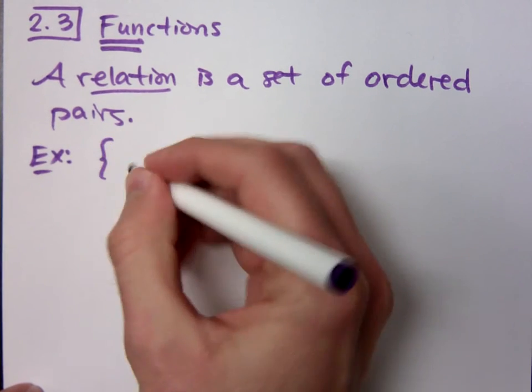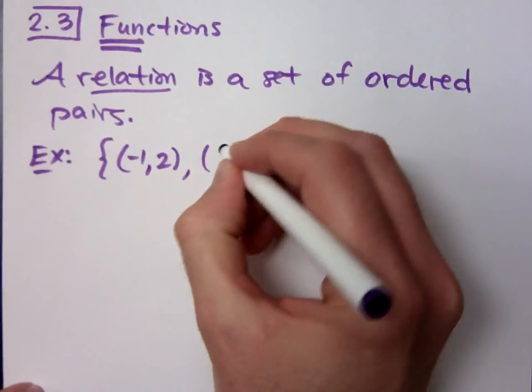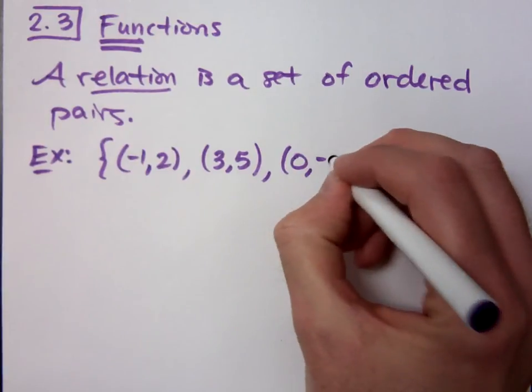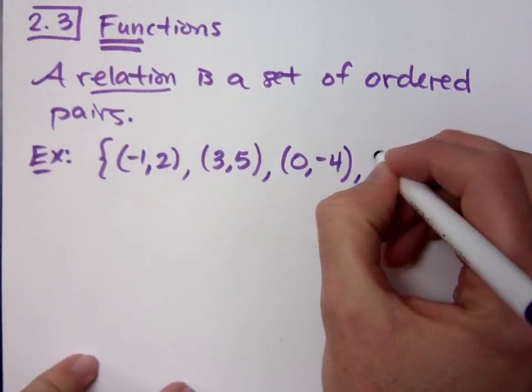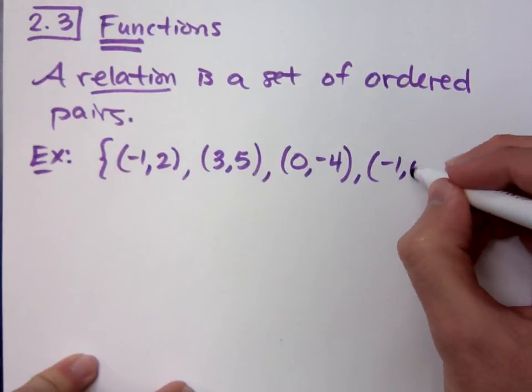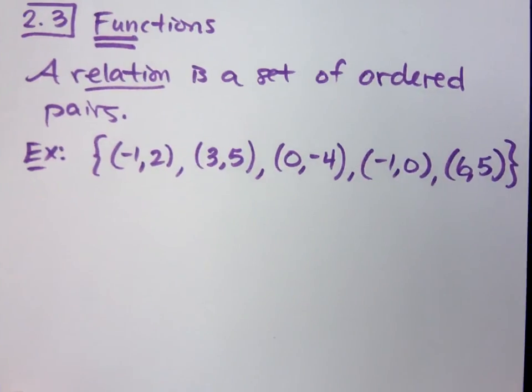So we can have something as simple as this, the ordered pairs: (-1,2), (3,5), (0,-4), (-1,0), (6,5). This is a relation, that's all it is. It's just a collection of ordered pairs. In this case, we have 5 elements, 5 items, and they're each an ordered pair.